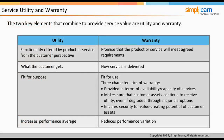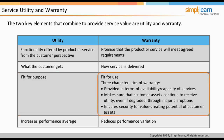One of the key concepts in Service Strategy is to determine how to create service value. The two key elements that combine to provide service value are utility and warranty. Service utility is the functionality offered by the product or service from the customer perspective. Warranty is a promise that the product or service will meet agreed requirements. Utility is what the customer gets, whereas warranty is how the service is delivered.